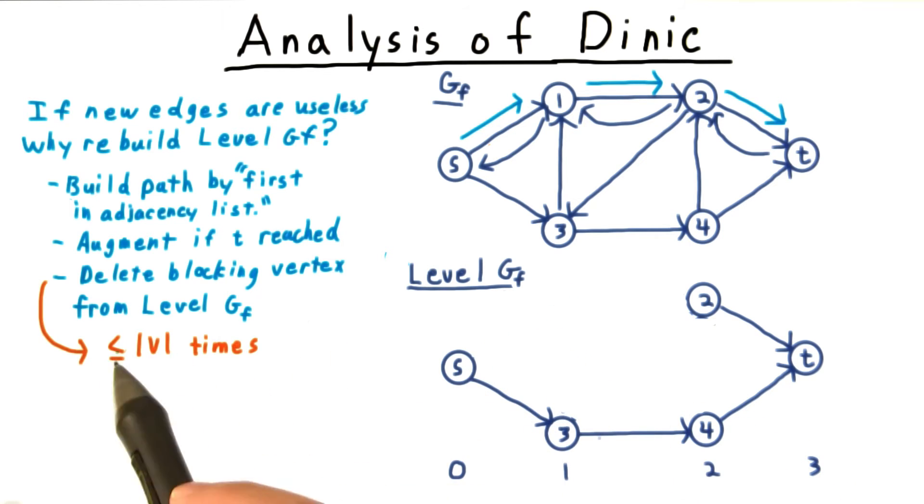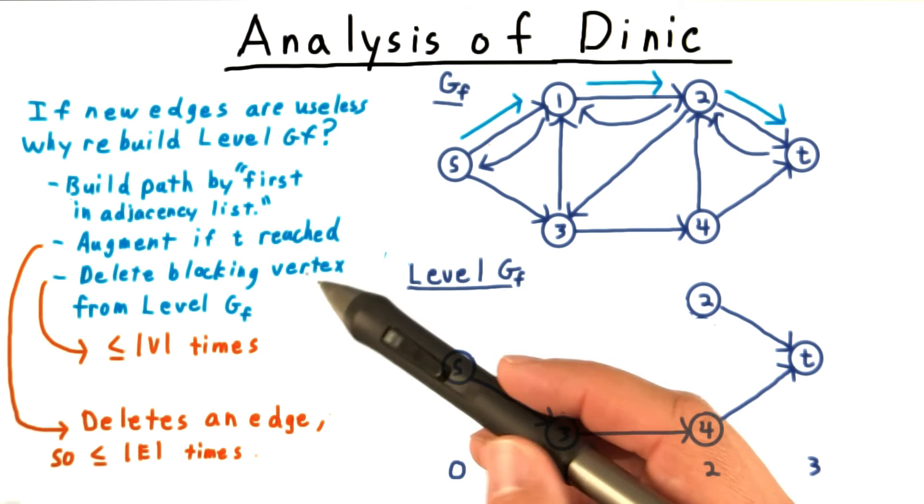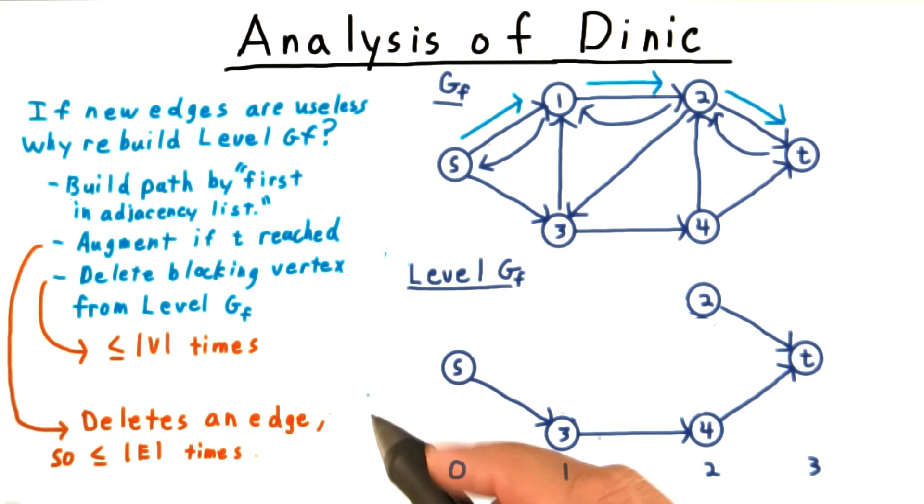There are only V vertices in the graph, so we can't run into more than V dead ends. And every augmentation deletes the bottleneck edge, so we can't delete more than E edges. Overall then, we won't try more than E paths.